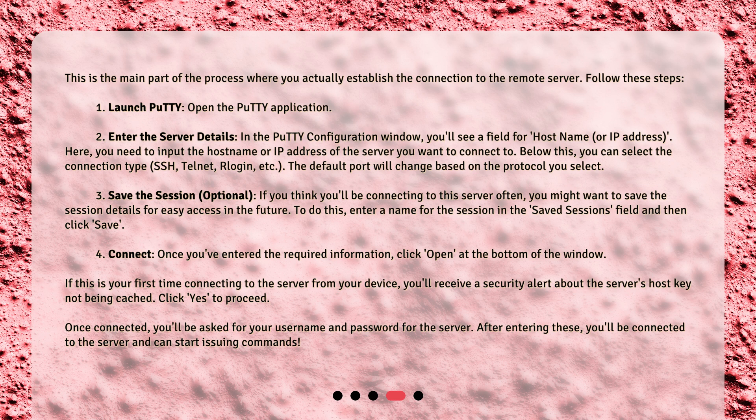Below this, you can select the connection type — SSH, Telnet, Rlogin, etc. The default port will change based on the protocol you select. Step 3: Save the session (optional). If you think you'll be connecting to this server often, you might want to save the session details for easy access in the future. To do this, enter a name for the session in the Saved Sessions field and then click Save.